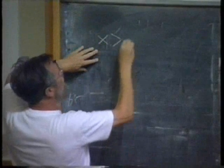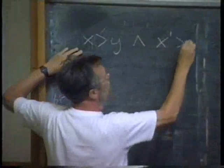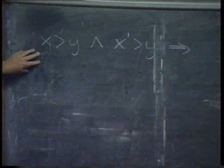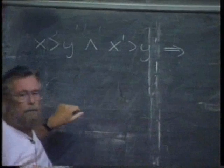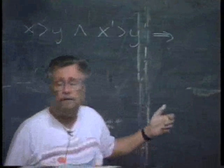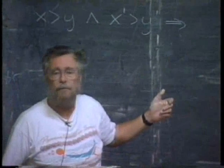If X is larger than Y and X prime is larger than Y prime, what are you willing to conclude? In general, X is larger than Y and X prime is larger than Y prime. Can you draw an obvious conclusion from that?